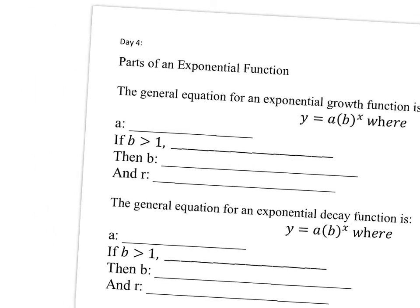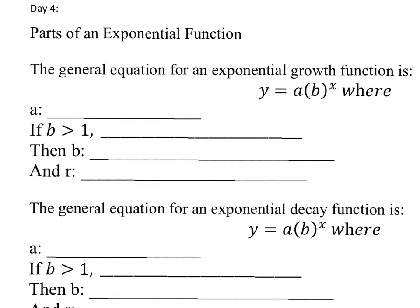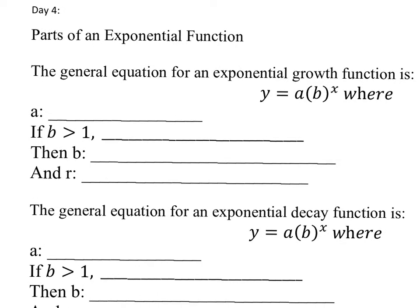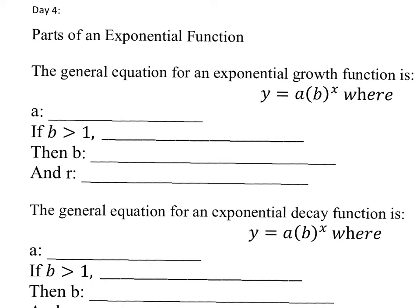If we're looking specifically at growth, that means b is going to be greater than 1. a is what we call our y-intercept, or initial value. So a being our y-intercept, it's the initial value we start at. If b is greater than 1, then that is showing growth in our graph, and b is what you call the growth factor.